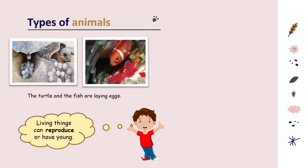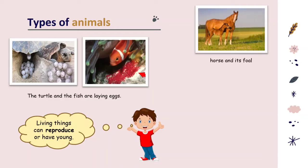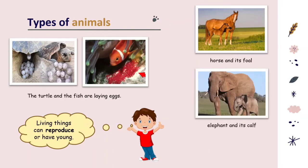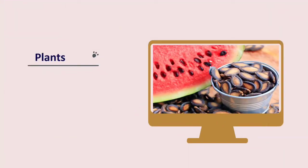Their young hatch from the eggs. So these are the examples: the turtle and the fish are laying the eggs. Next, horse and its foal, and here elephant and its calf. Some animals give birth to live young. How about plants? Look at the picture. There are some watermelon seeds and its fruit. Many kinds of plants reproduce from seeds.